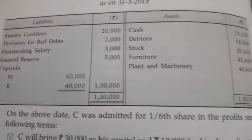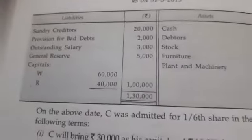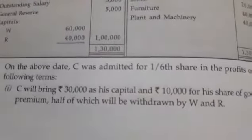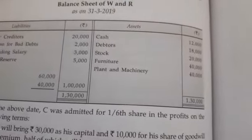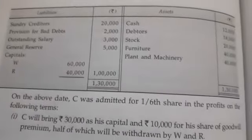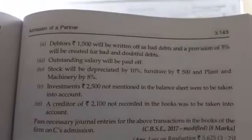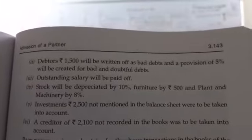On the above date, C was admitted for a one-sixth share in the profits of the firm on the following terms. Number one: she will bring rupees 30,000 as capital and rupees 10,000 for her share of goodwill premium, half of which will be withdrawn by W and half by R.